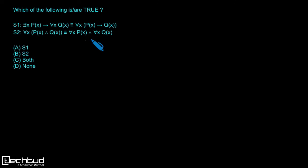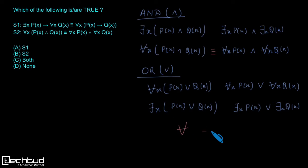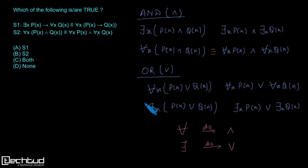This is a recall kind of question. We should remember that the universal quantifier (∀) is distributive over 'and' (∧), and the existential quantifier (∃) is distributive over 'or' (∨).